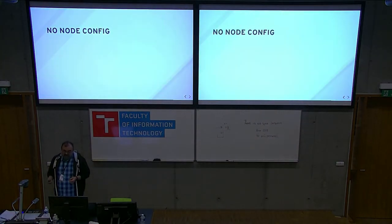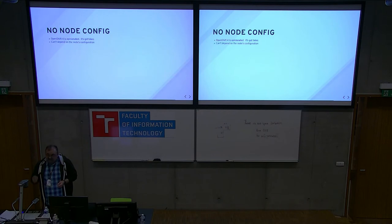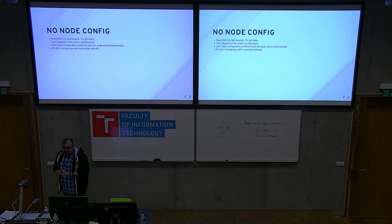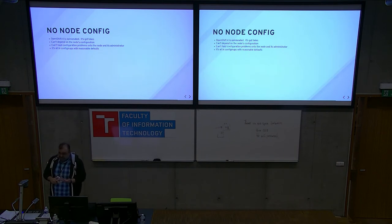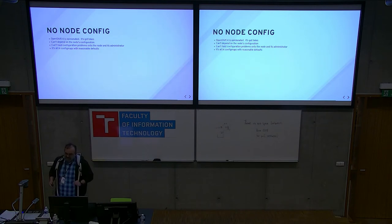For 4.0, the other big thing is that OpenShift 4 is very opinionated about how you run your cluster. In particular, you can't depend on the node's configuration — or reworded, you can't force your configuration problems onto the node. So we needed a way to get things like CA configuration and build configurations into the build container. Now it's all in config maps. Config maps are, or will be, available cluster-wide, so you don't have to configure them for every project and namespace.